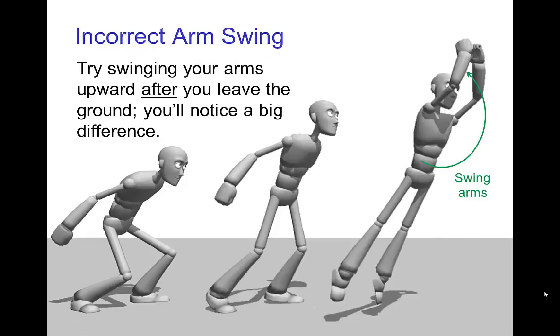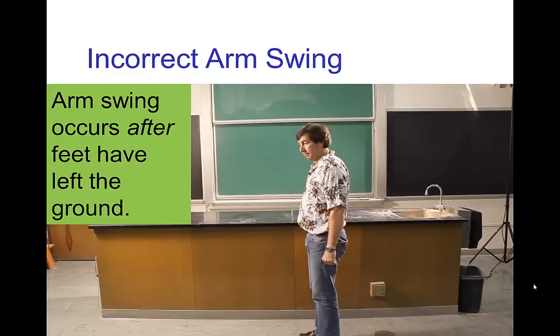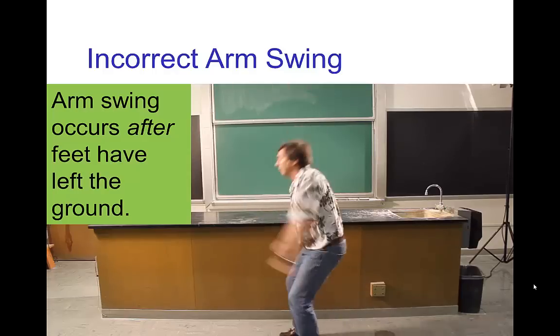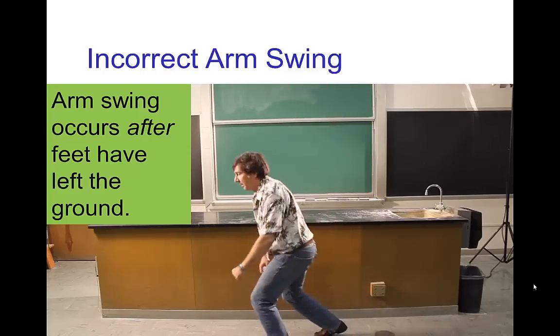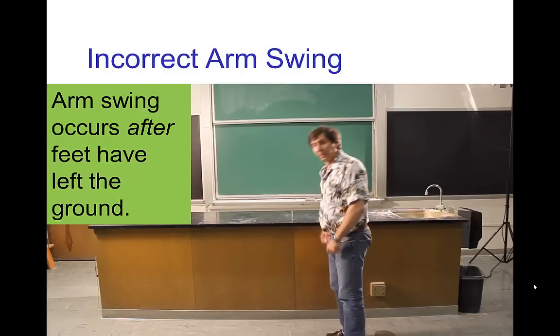Now, the incorrect way to animate the arm swing in a jump would be to swing the arms late, basically to be swinging the arms as the character has already left the ground. Let's see what happens if you try to jump in this fashion. This is very unnatural and highly uncomfortable, so I strongly recommend that you try it yourself so that you can feel what it's like.